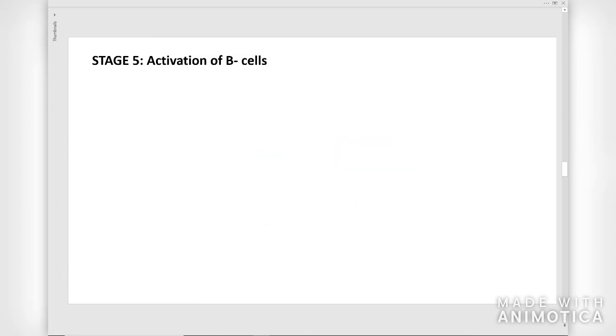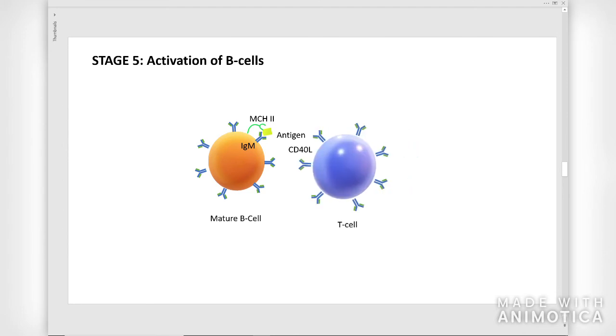Stage 5. The activation of B cells can be T cell independent and T cell dependent. Notice that T cell independent activation does not result in the production of memory B cells. B cell activation is initiated when the IgM and MHC2 of B cells bind to antigens. Then CD40 ligand on T helper cells binds to the protein CD40 on B cells. Other cytokines also help to activate B cells.